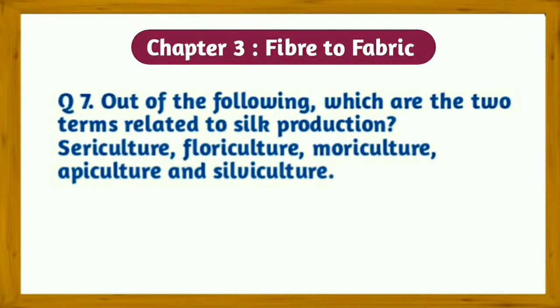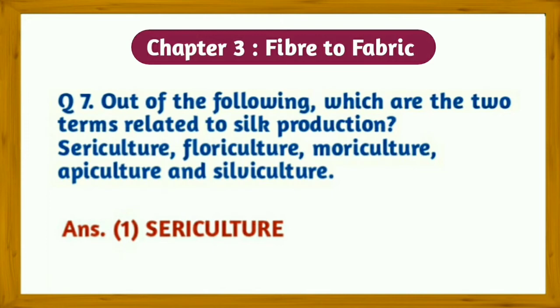Question number seven: Out of the following, which are the two terms related to silk production — sericulture, floriculture, moriculture, apiculture, and silviculture? Answer: (1) Sericulture, (2) Moriculture.